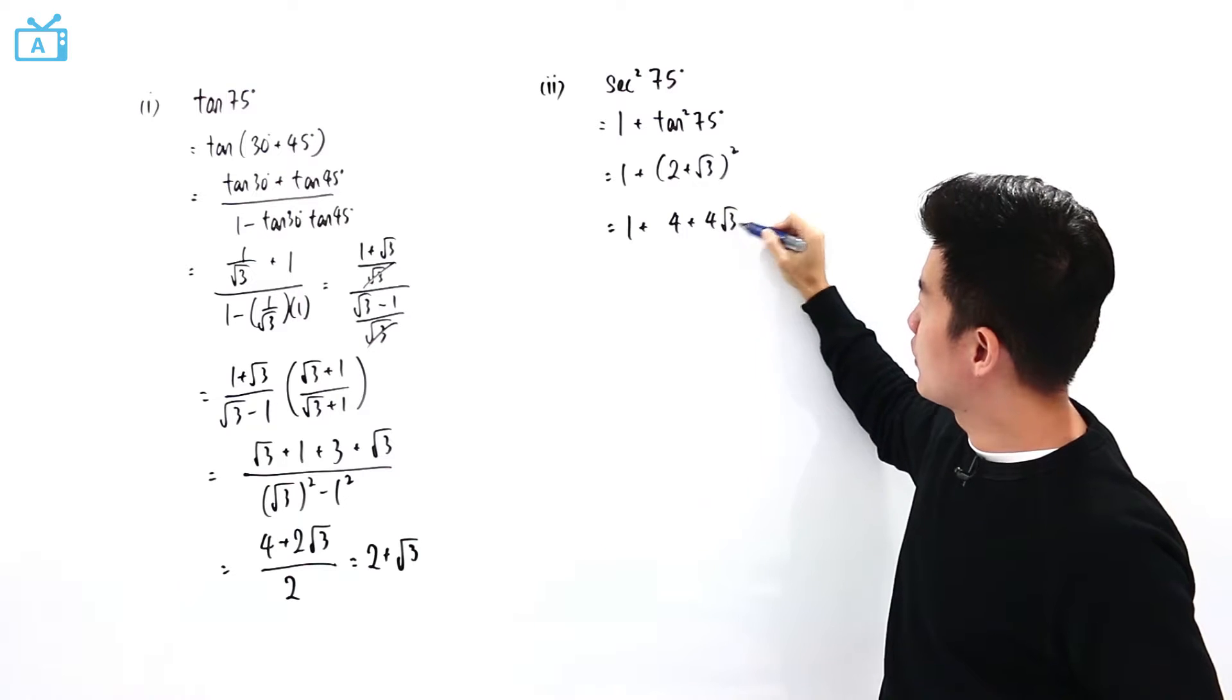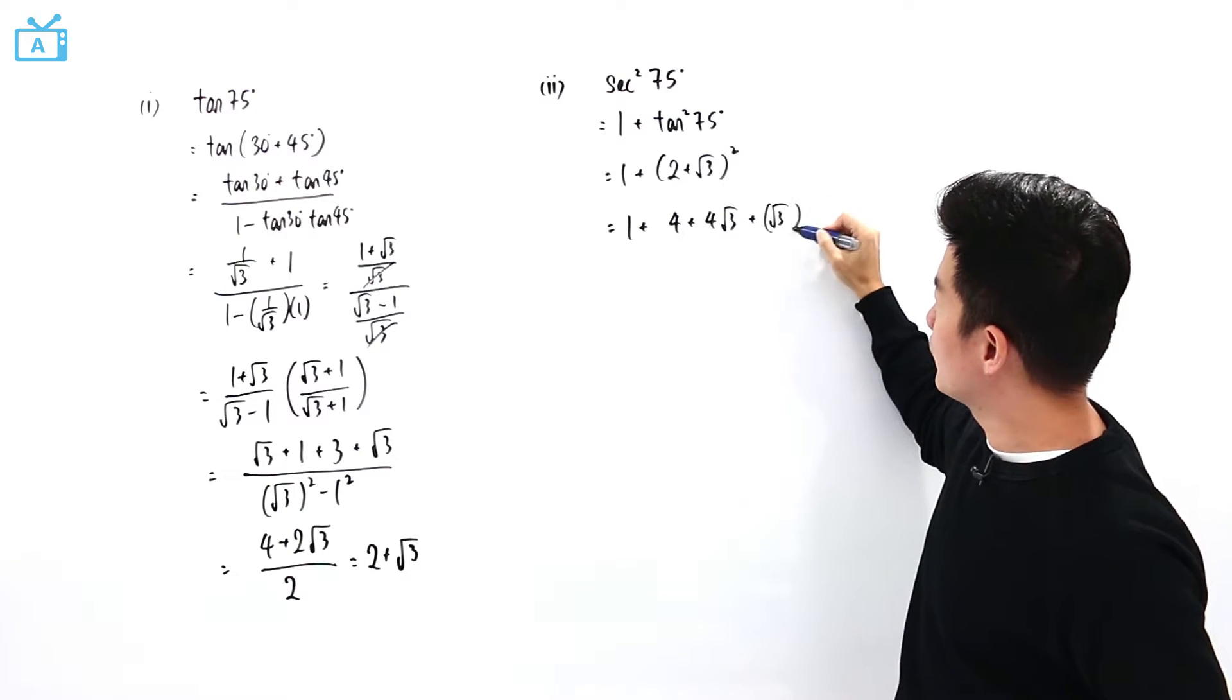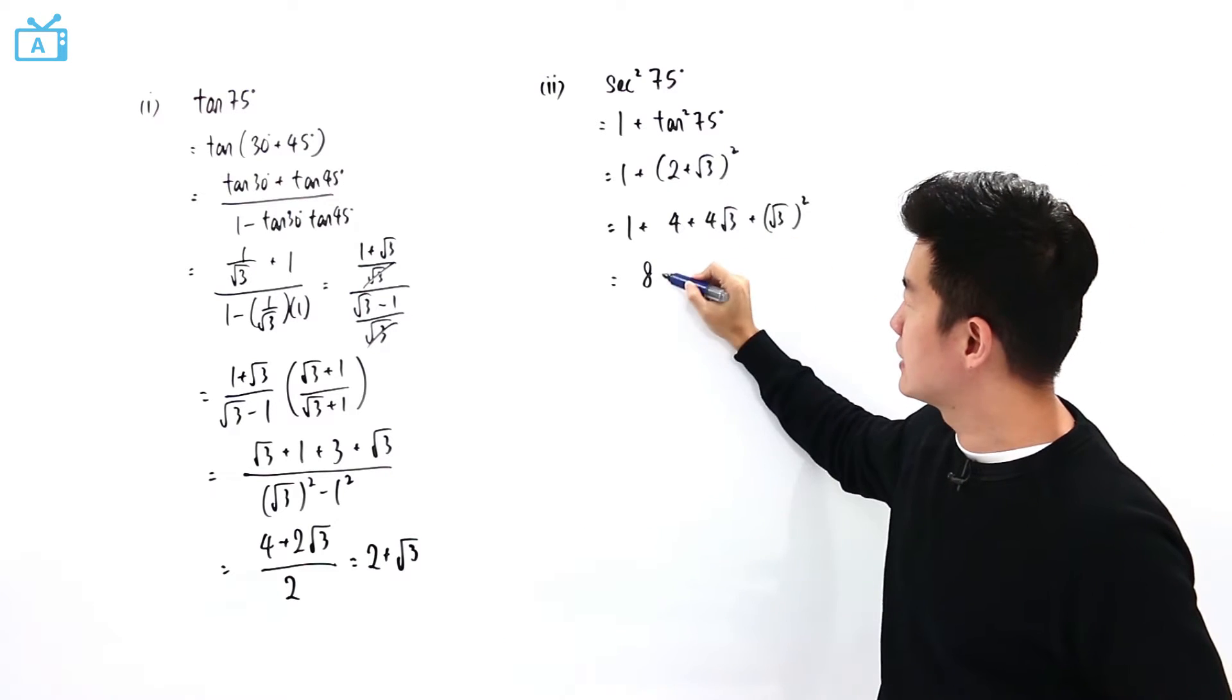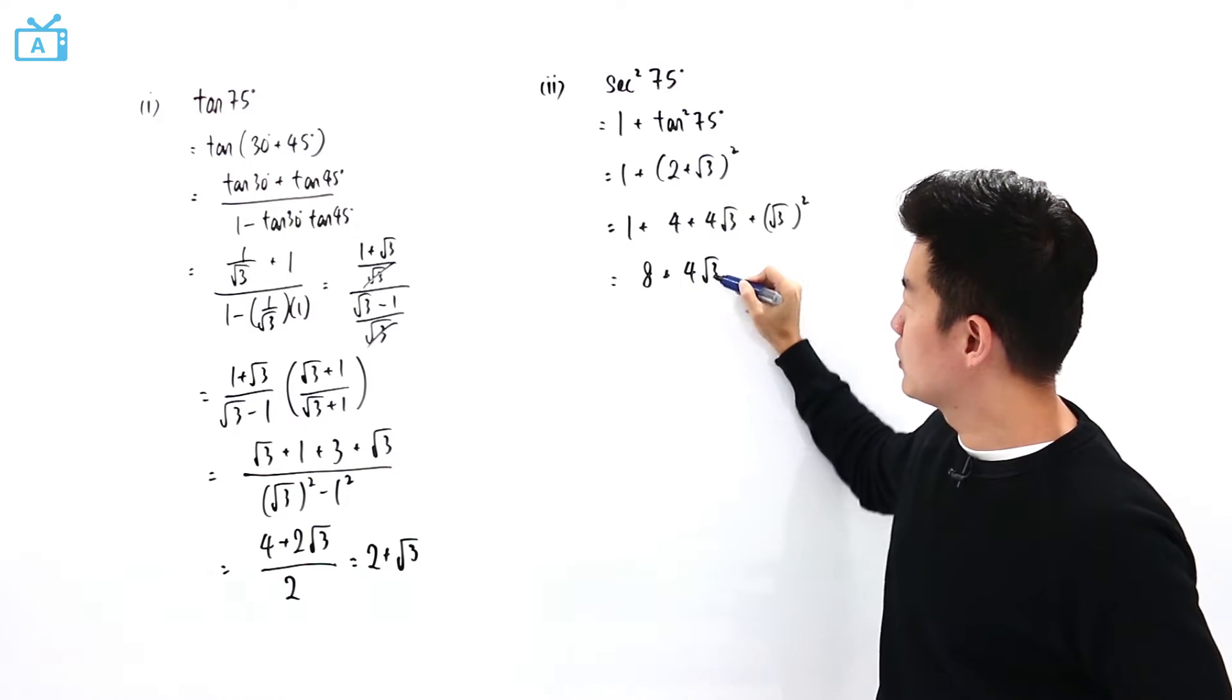4 plus 4 square root of 3 plus square root of 3 squared. So what we have is 1 plus 4 plus 3, which is 8 plus 4 square root of 3.